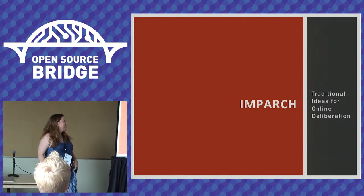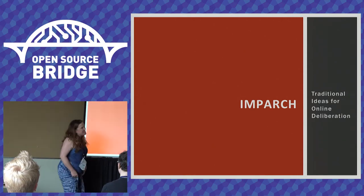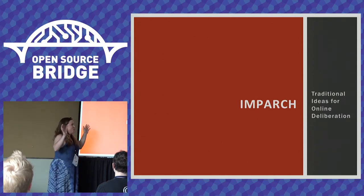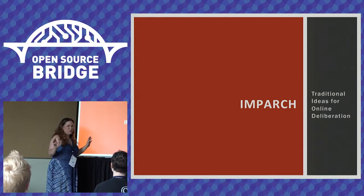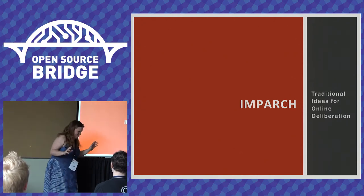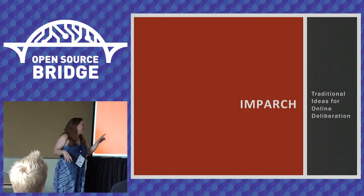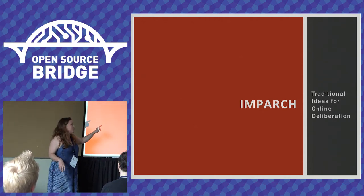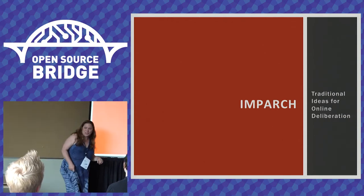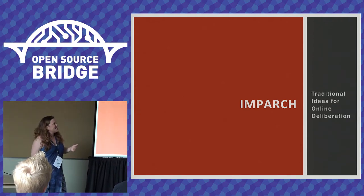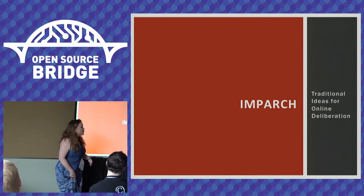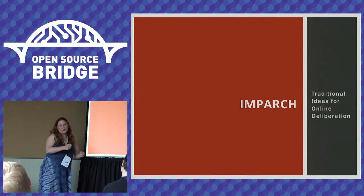First we're going to talk about something I refer to as impartial identity architecture. I used to call this IIA, but then I met some linguists and they said IIA means something else — so I've gotten to the point of saying don't use acronyms. The linguists suggested calling it 'imparch.' Impartial identity architecture covers traditional ideas for how identity influences your community, people's roles in the community, and the way the community actually functions.